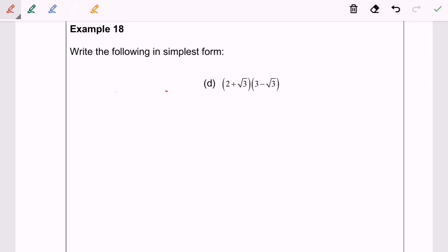Now we are going to discuss example 18d. Write the following in the simplest form: (2 + √5)(3 - √5). Step number 1 is to expand. So now we are going to expand 2 multiplied with 3.